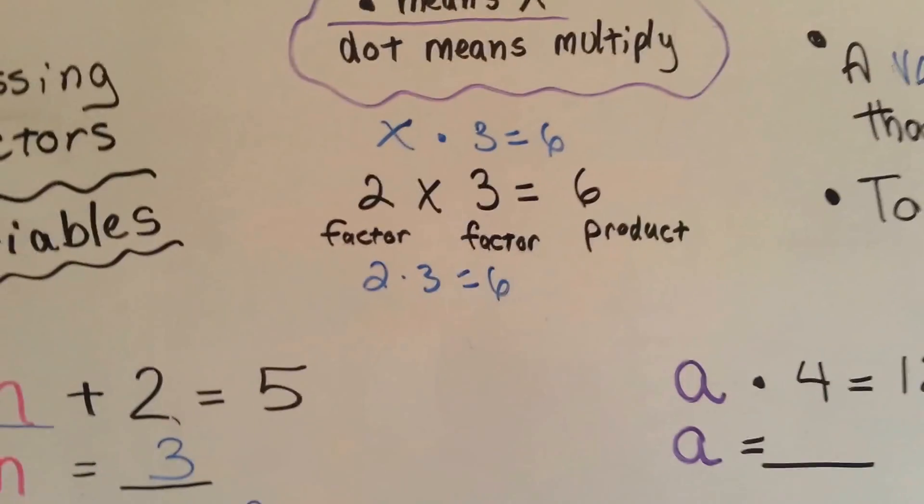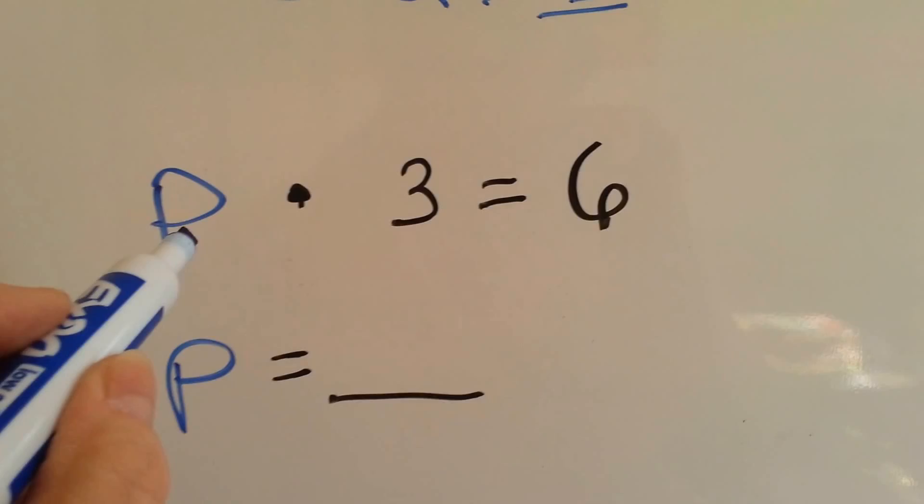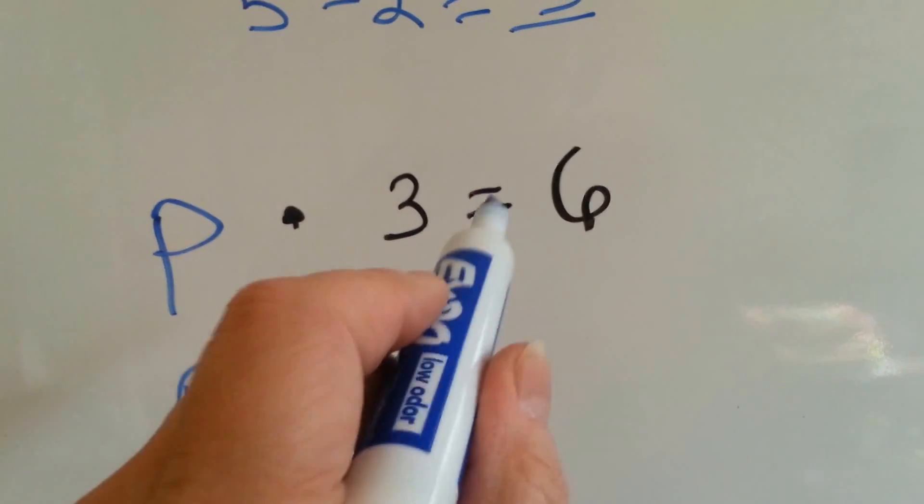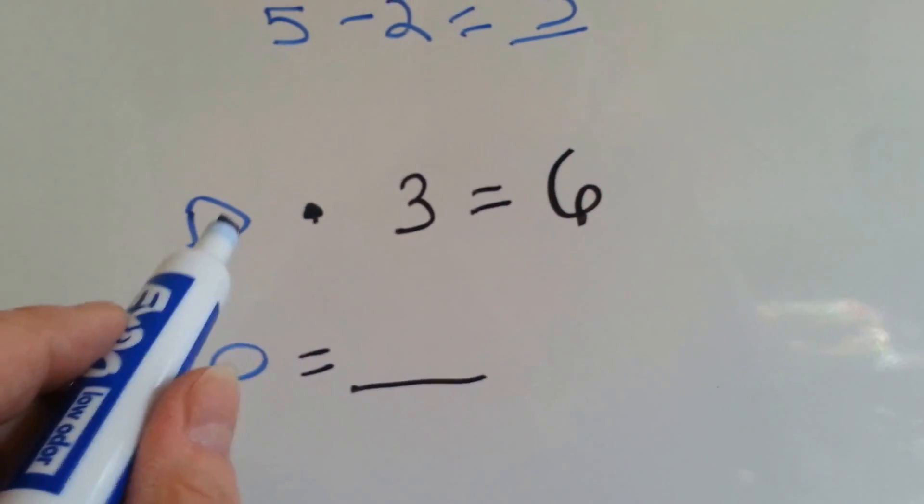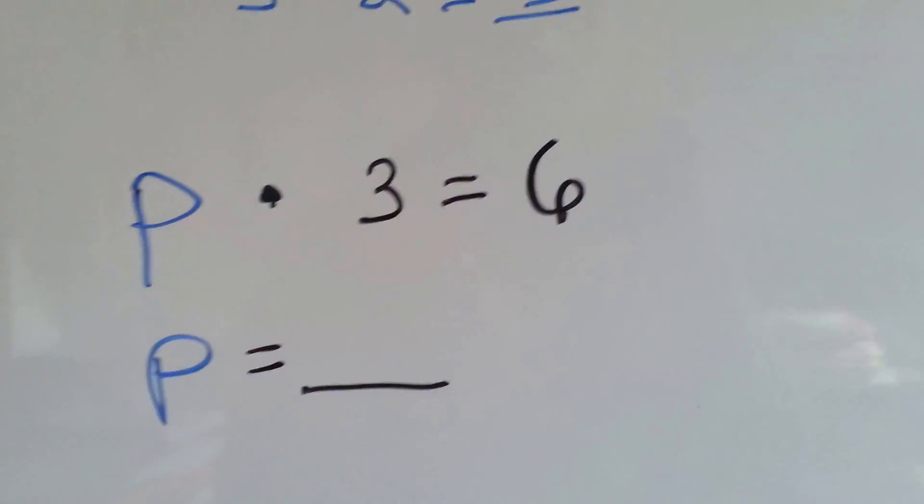So now let's take a look at some of these. P is going to be our variable. It's going to stand for a number. P times 3 equals 6. P times 3 equals 6. Something times 3 is equal to 6.